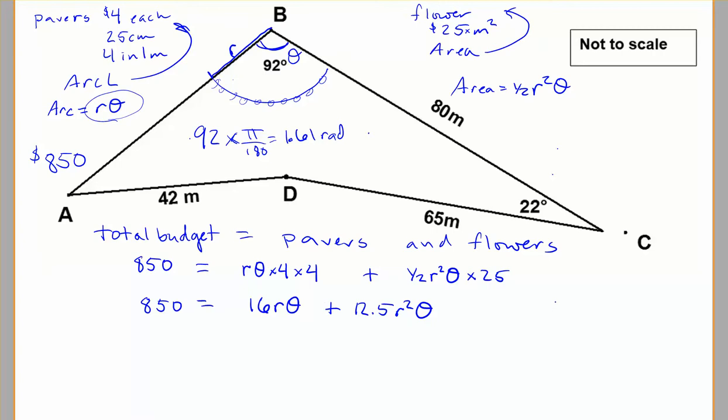And let's think about replacing theta. So theta is our angle, and we have to have that in radians. We converted that earlier. 92 degrees times pi divided by 180 gives us 1.61 radians. So if I plug that in, 850 equals 16 times 1.61 theta, plus 12.5 times 1.61, oops sorry, that's not theta on the last one, that's times the radius, times the radius squared.